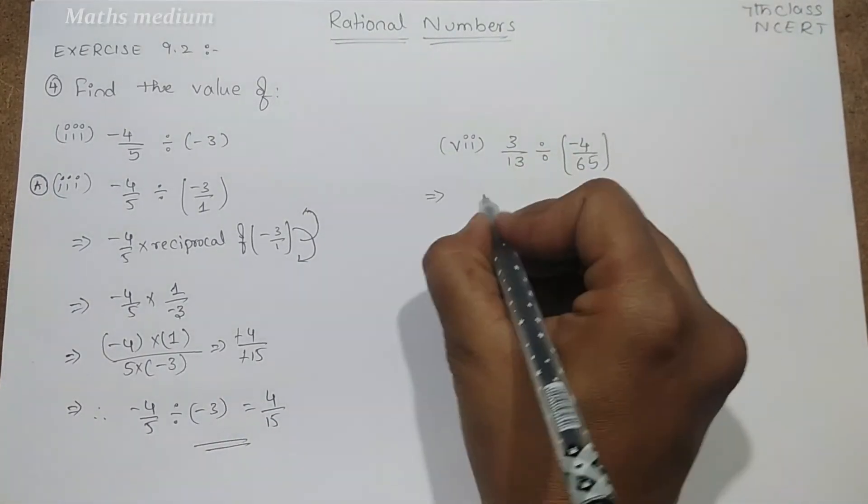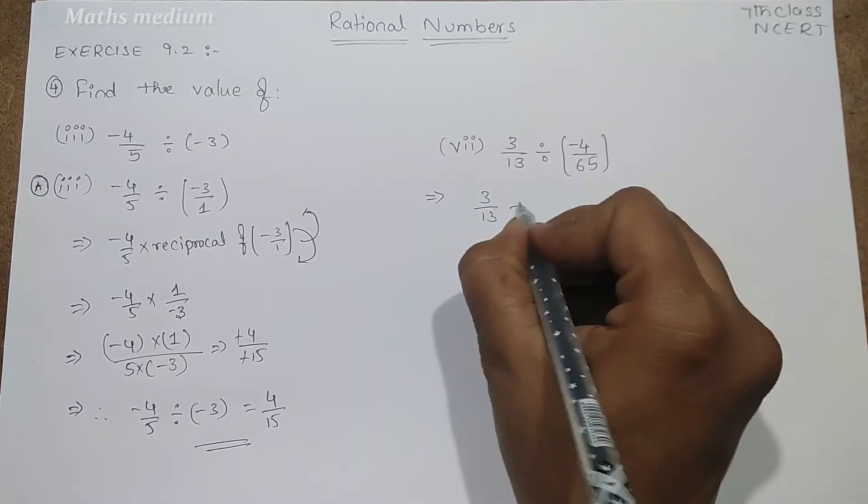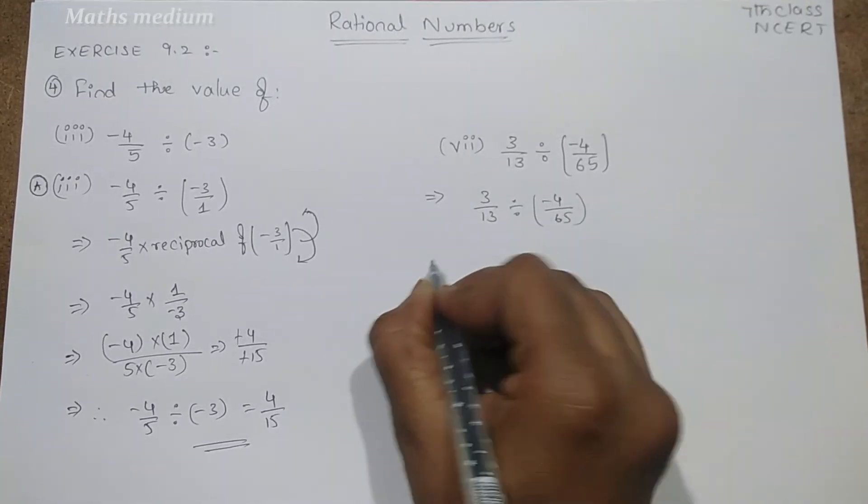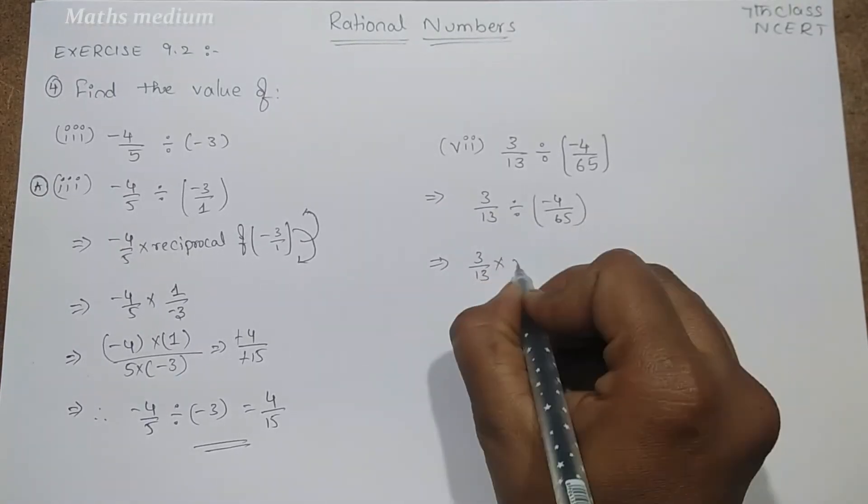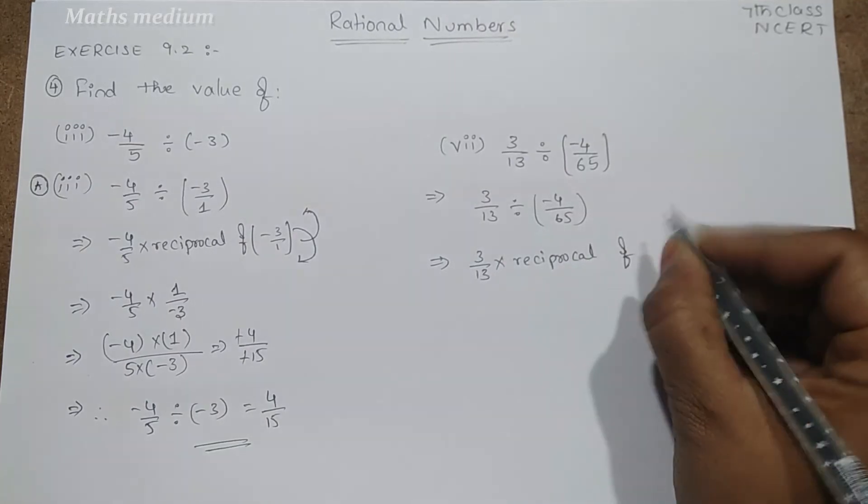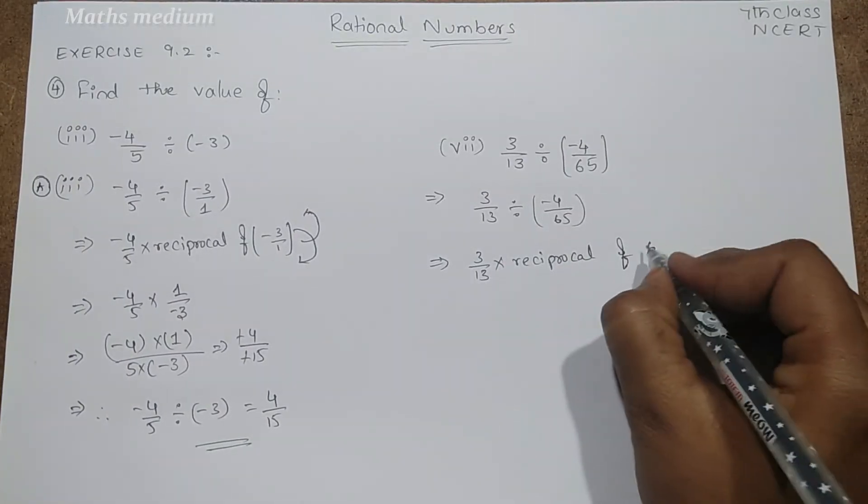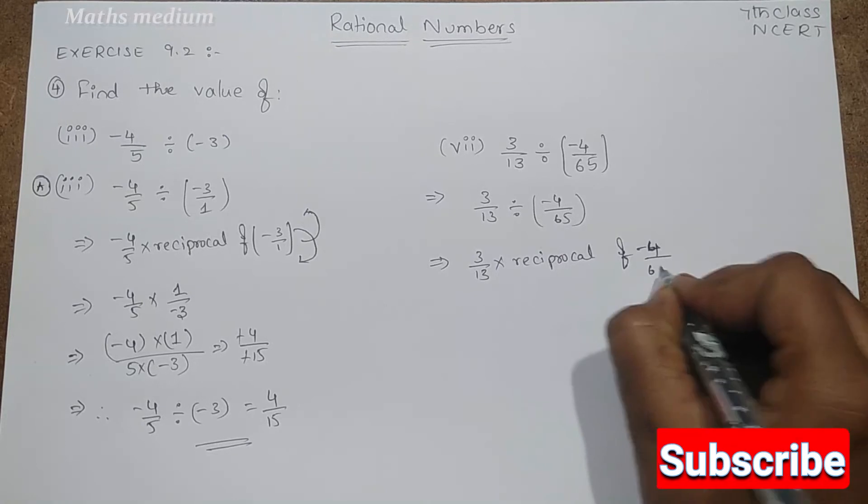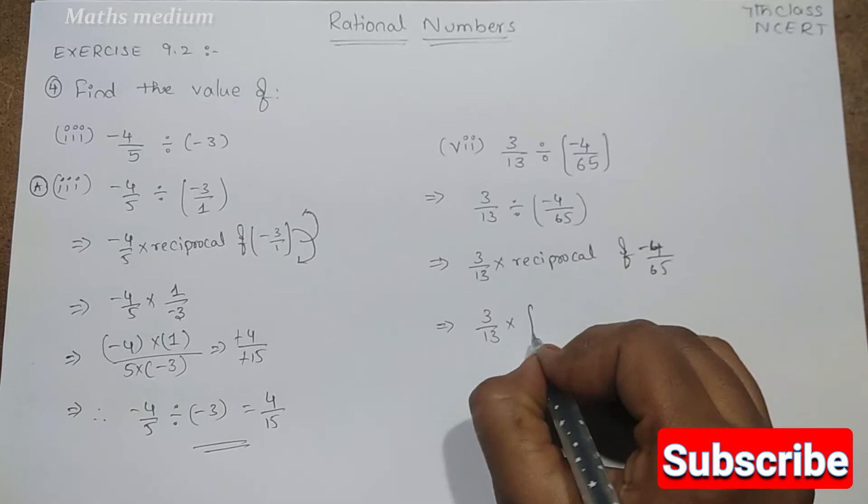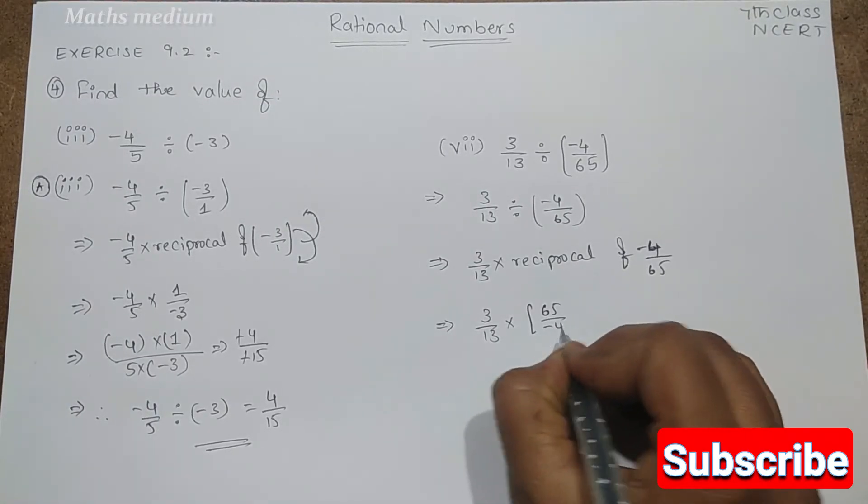Next, this one is 3/13 divided by -4/65. Now we can write it as 3/13 into reciprocal of -4/65. So 3/13 into 65/(-4).